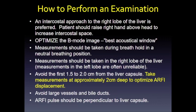Measurements should be taken during a breath hold in the neutral breathing position. We image the right lobe, typically segments 5, 7, or 8, seeking the best acoustical window. We avoid the first 1.5 to 2 centimeters from the liver capsule because refractive artifact there will give inaccurate measurements.